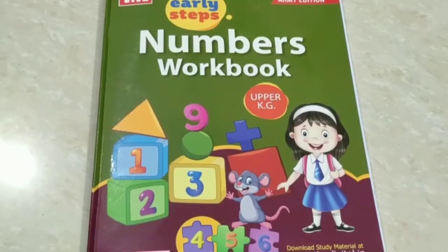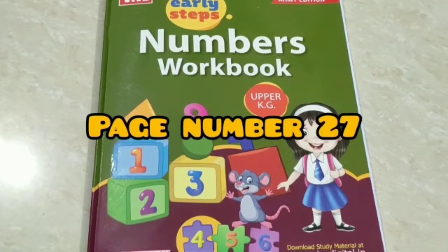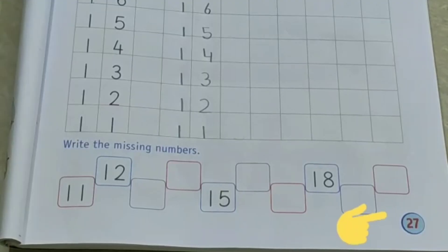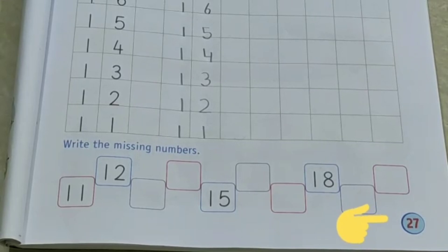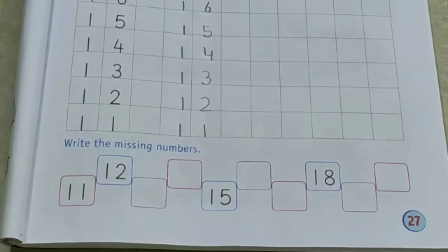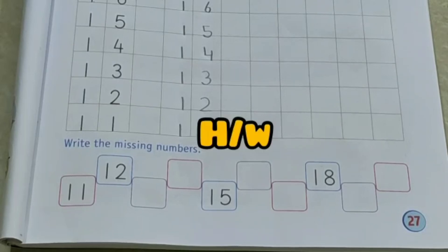So this is your maths workbook. Now open page number 27. So children, this is page number 27. And our question is, write the missing numbers. So children, this is your homework. Do it the way I have shown you. Okay?